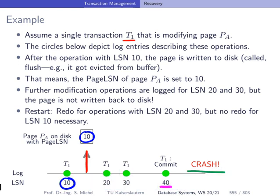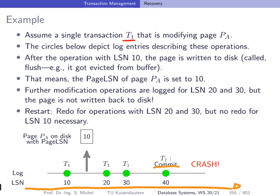So obviously the last information that was included in this page PA on disk was the operation that is described by log sequence number 10. And those here are not yet reflected. How do we find this out? Well, let's do the redo phase. We know first of all that T1 is like a winner because it has committed before the crash. So let's do the redo. We walk from the beginning until the end of our log file. We look at this entry here 10. We compare 10 to 10 and we see that this has already been reflected in this page PA that was present on disk after the crash. Then we compare 20 to 10 and we see that this was not yet reflected. So we apply this operation and update this page PA, the page sequence number to 20.